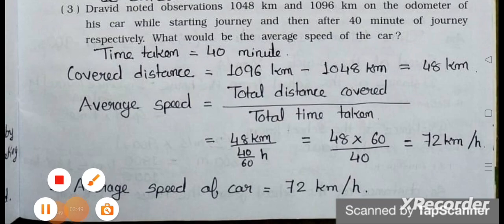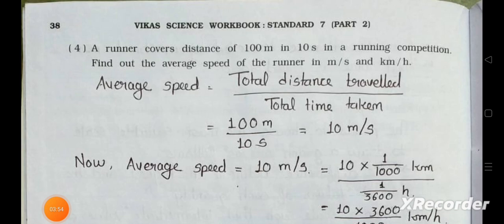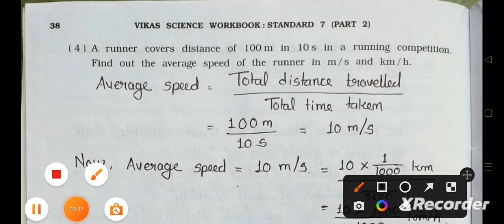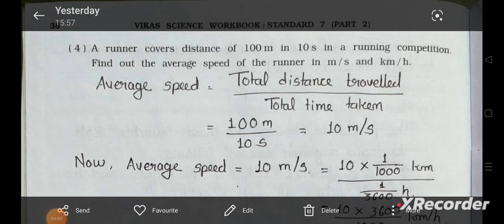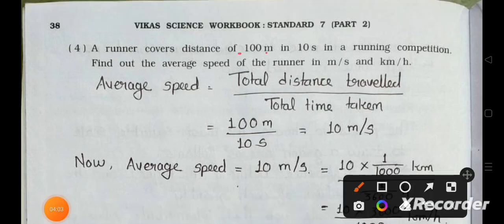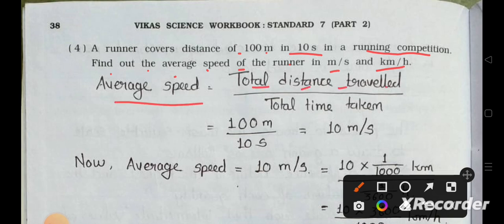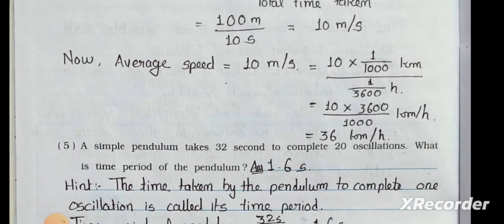Question number four: A runner covers a distance of 100 meters in 10 seconds in a running competition. Find out the average speed of the runner in meter per second and kilometer per hour. Average speed = total distance traveled ÷ total time taken = 100 meter ÷ 10 seconds = 10 meter per second.